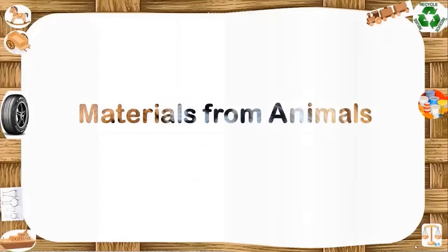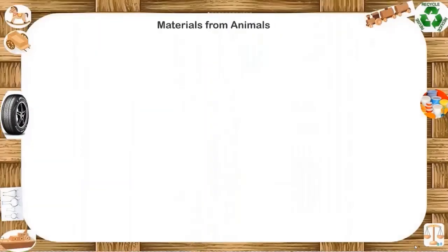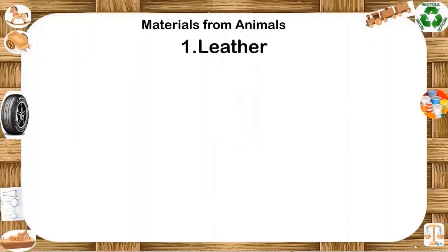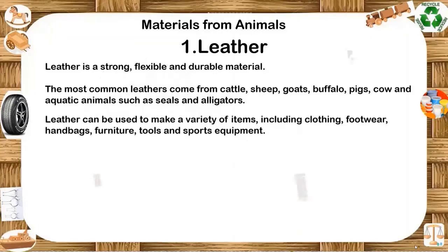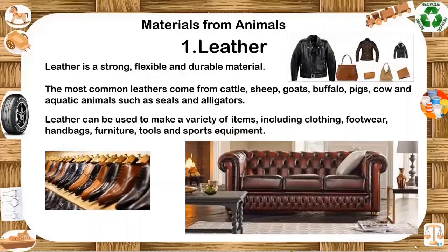Materials from animals — leather. Leather is a strong, flexible and durable material obtained from the tanning or chemical treatment of animal skin. The most common leather comes from cattle, sheep, goats, buffalo, pigs, cows and aquatic animals such as seals and alligators. Leather can be used to make a variety of items including clothing, footwear, handbags, furniture, tools and sport equipment.